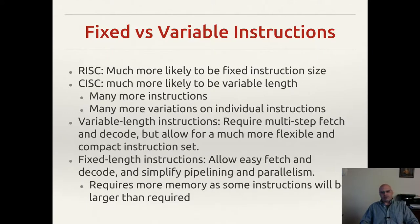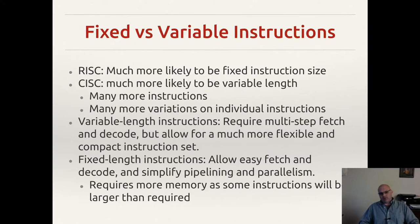One more architectural subject to touch on before moving into the organizational pieces is what is meant by a fixed and variable length instruction. A fixed length instruction is exactly what it sounds like: if you take your operands and your opcodes, your instruction will always take up the same amount of bits. For example, with a 16-bit instruction, every 16 bits you will find one complete instruction, even if it's only using a portion of that to relay anything. Even if you have no operands, you still use the same 16 bits every time.